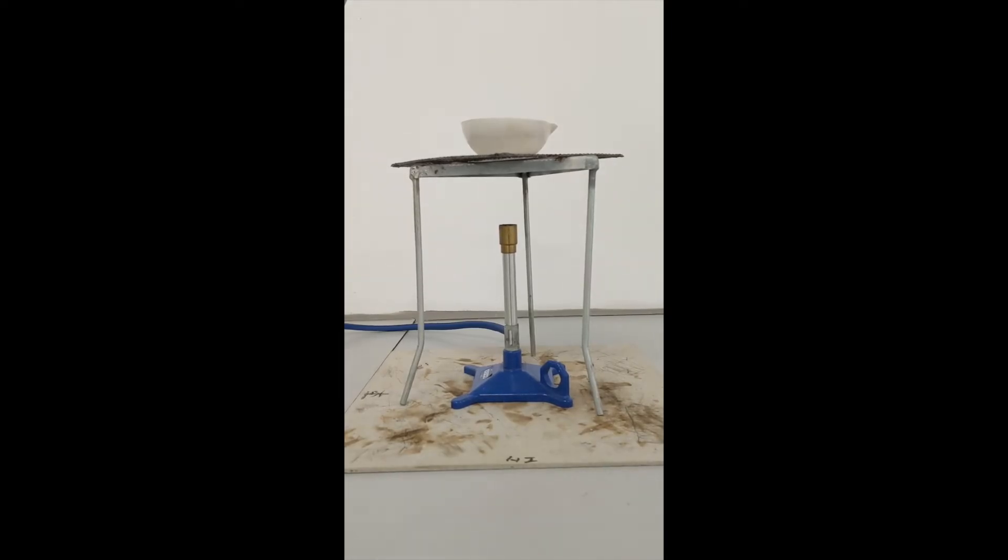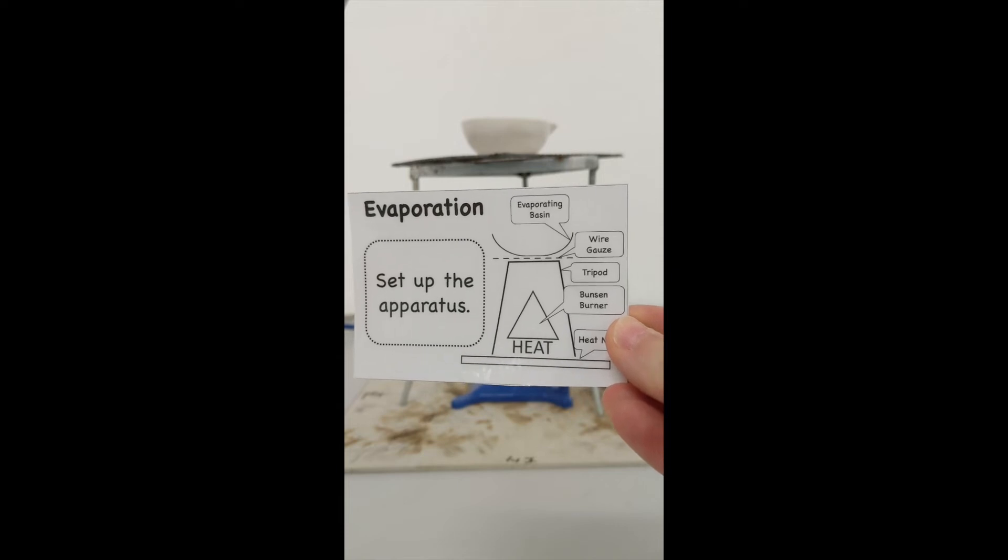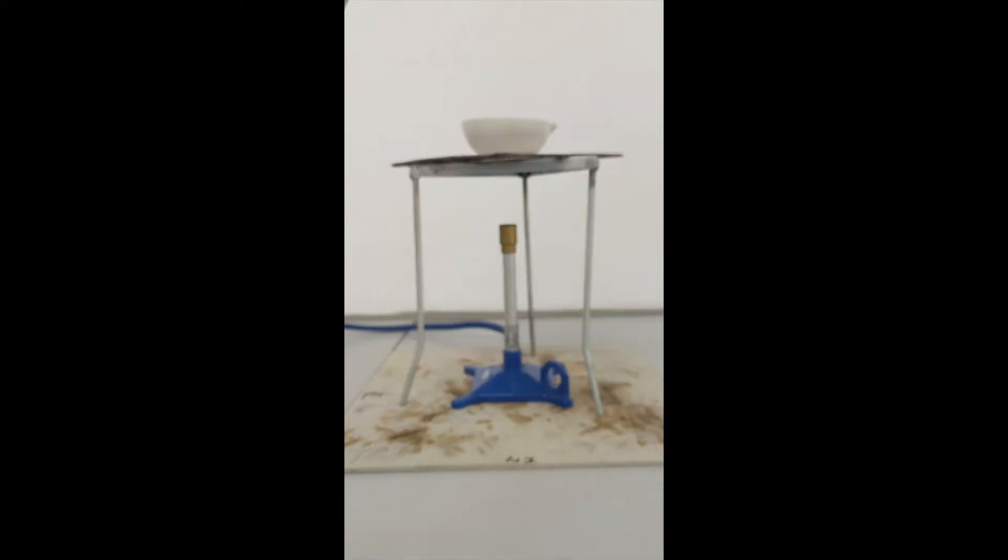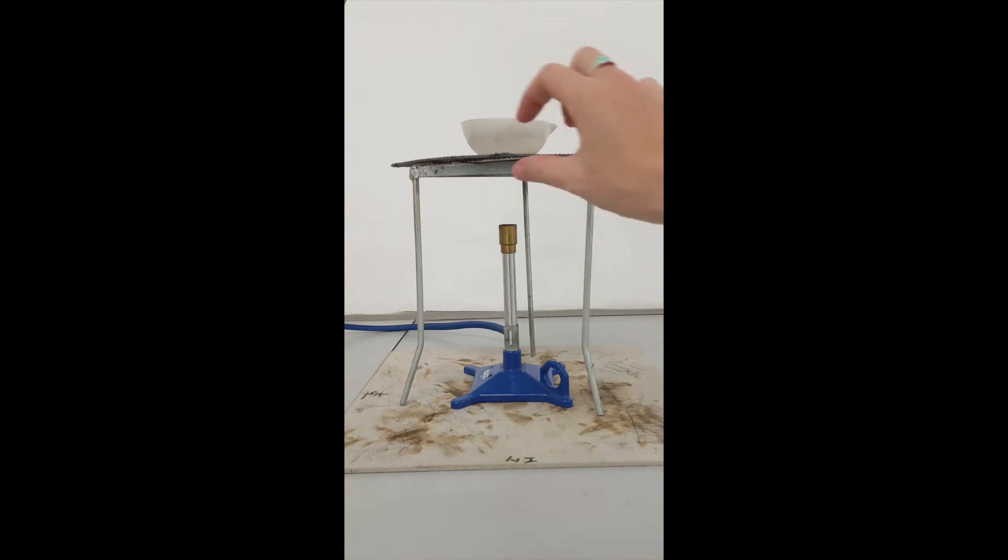Now we are ready for evaporation. We are going to set up our apparatus just like in the diagram: heat mat, Bunsen burner, tripod, wire gauze, and evaporation basin.